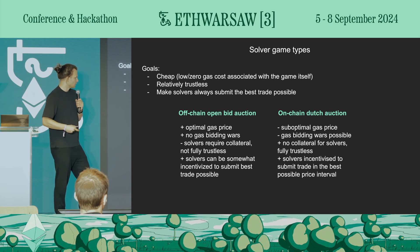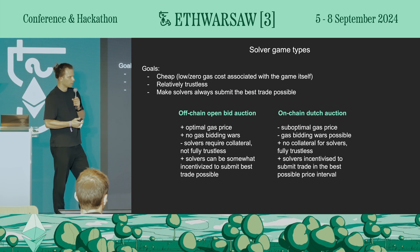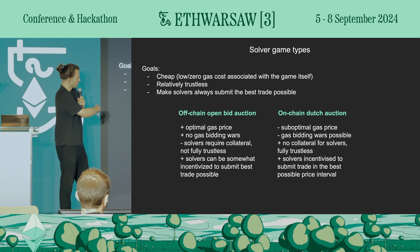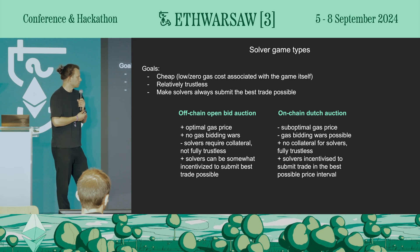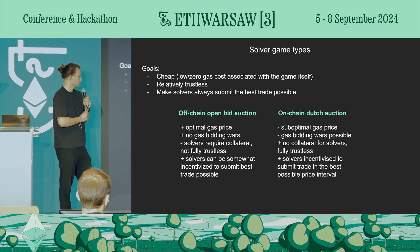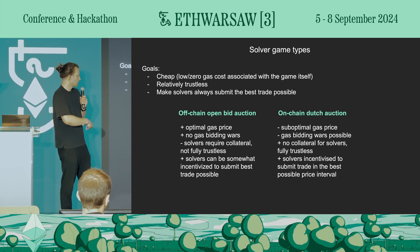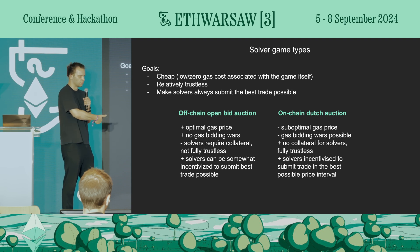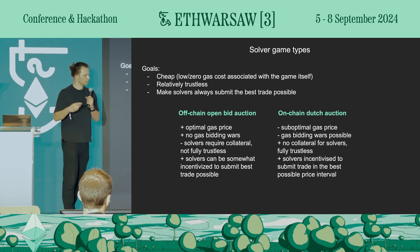Right now, off-chain open bid auction is definitely better on Ethereum — CoW Fi has a volume roughly 10 to 20 times bigger than Uniswap X, so the gas price aspect on Ethereum clearly wins. Neither protocol is deployed on any chain other than Ethereum. My prediction is that whenever they get on L2s, the situation can flip, because on L2s gas price is much less relevant. So whenever these two are deployed on Arbitrum, Uniswap X could actually start winning over CoW Fi since those gas-related factors become much less relevant.